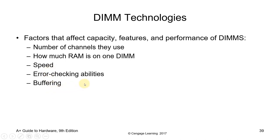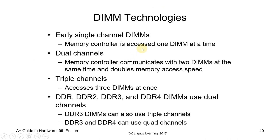Factors that affect capacity, features, and performance of DIMMs include: number of channels used, how much RAM is on one DIMM, speed, error checking abilities, and buffering. Early single-channel DIMMs had the memory controller access one DIMM at a time. Dual-channel has the memory controller communicate with two DIMMs simultaneously, doubling memory access speed. DDR, DDR2, DDR3, and DDR4 DIMMs support dual channels. Triple-channel accesses three DIMMs at once. DDR3 and DDR4 also support quad channels.